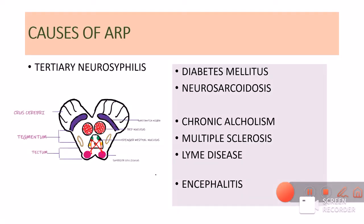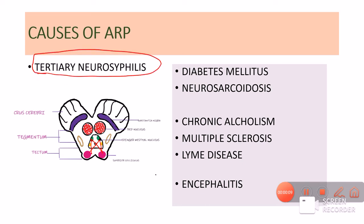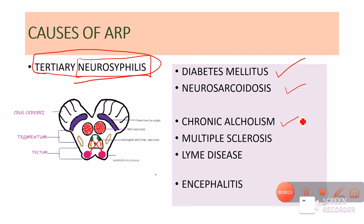What are the causes of Argyle Robertson pupil? In the pre-penicillin era, the major cause was tertiary neurosyphilis. However, now that penicillin is available, there are many other causes, including diabetes mellitus, neurosarcoidosis, chronic alcoholism, multiple sclerosis, and infections like Lyme disease and encephalitis.